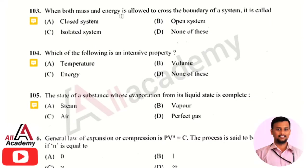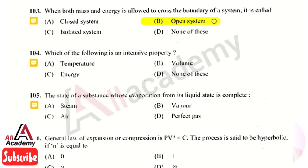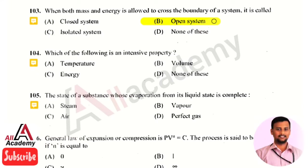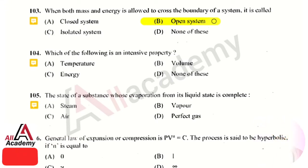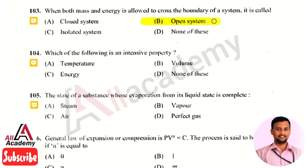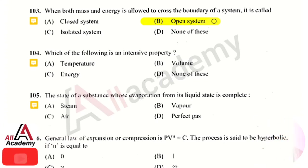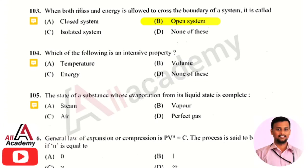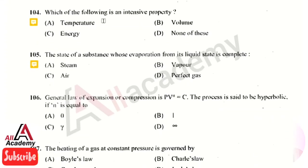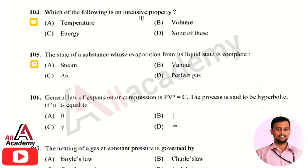The next question: when both mass and energy are allowed to cross the boundary of a system it is called — the right answer is option 2, that is open system. Thermodynamic systems are classified into three types: open system, closed system, and isolated system. In an open system, both energy and mass cross the system boundary. In a closed system, only energy crosses the boundary. In an isolated system, neither energy nor mass crosses the system boundary.